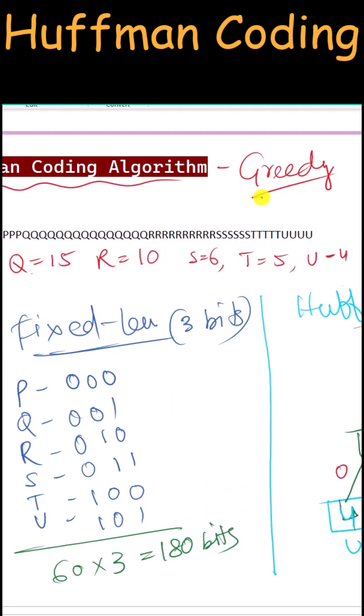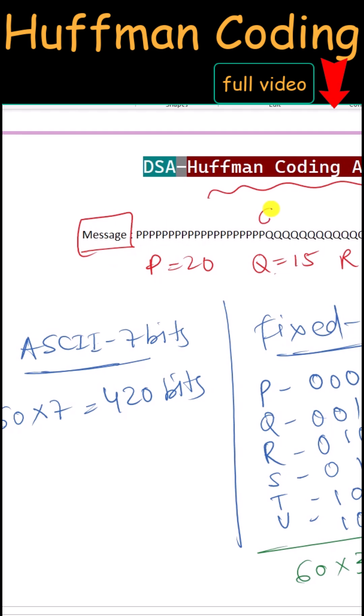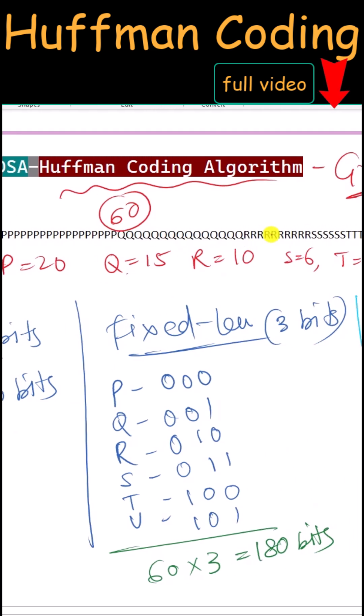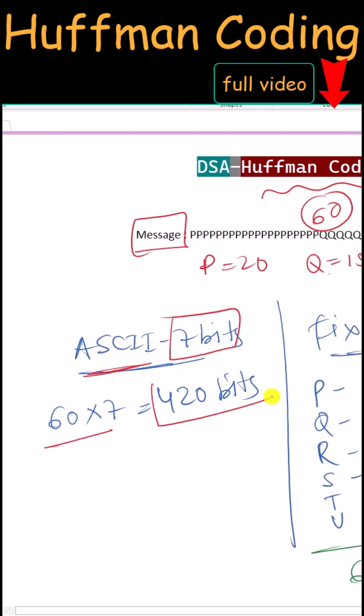The Huffman coding algorithm is a greedy method. Suppose you wanted to transmit this message with a total of 60 characters. If we use the ASCII 7-bit representation, it will take a total of 420 bits.